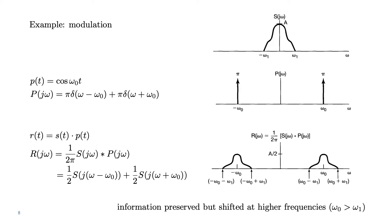What's interesting is that the information of the original signal S of j omega is preserved, but it has been shifted to higher frequencies around omega 0, where omega 0 is larger than omega 1, the maximum frequency of the original signal. Omega 0 is what we would call in communications the carrier frequency. We will see this in more detail.